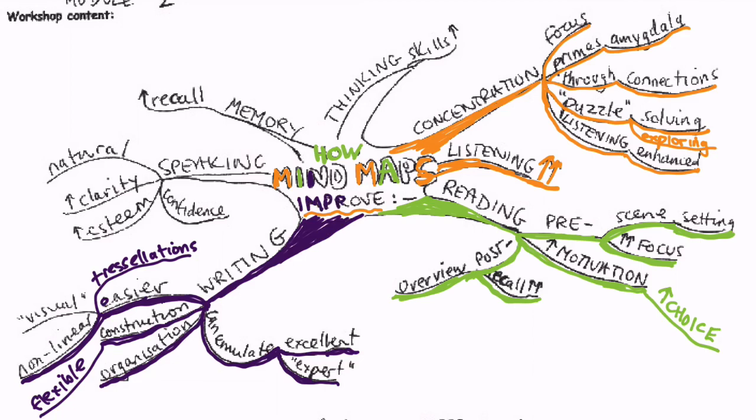There is absolutely no doubt that mind maps used regularly in the classroom improve students' speaking ability. A mind map can improve confidence, self-esteem, clarity in the way that students speak and helps them to tap into their natural speaking ability. So instead of them always trying to speak like somebody else, a mind map helps them to speak naturally.